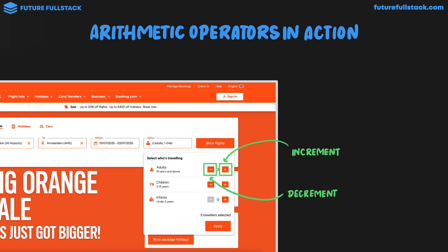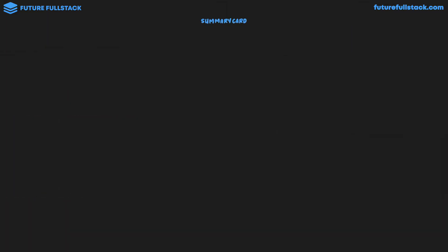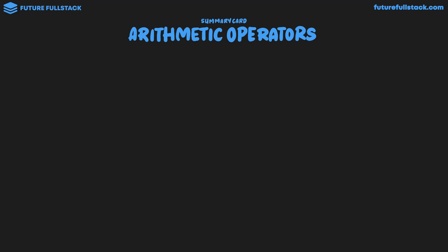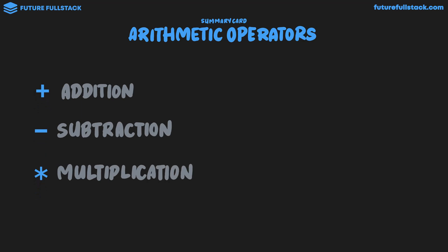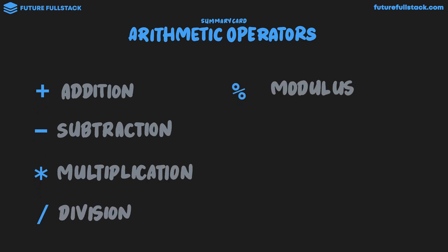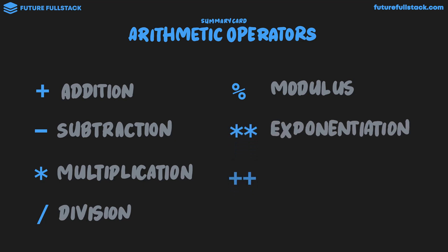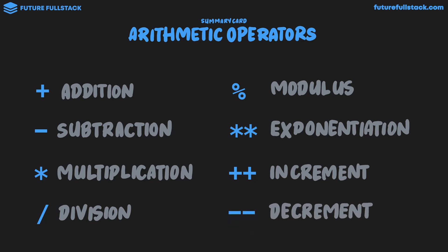Let's wrap up the theory of this video with a summary card on arithmetic operators. We looked at eight different operators: addition, subtraction, multiplication, division, the modulus which gives the remainder when two numbers are divided, exponentiation which raises a number to a power, and the increment and decrement operators which are performed on variables. We also spent a good chunk of the video looking at order of precedence.